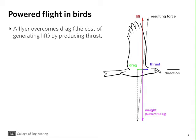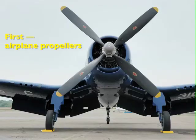Now in moving the wing through the air, the flyer - the bird - needs to overcome drag. It's the cost of generating lift. To do it, the bird flaps its wings to generate thrust.